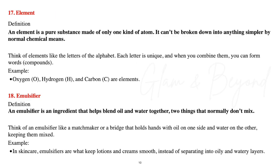Number seventeen, element. An element is a pure substance made up of only one kind of atom — it can't be broken down into anything simpler by normal chemical means. Think of an element like the letters of the alphabet: each letter is unique, and when you combine them, you can form words, or compounds. Examples: oxygen (O), hydrogen (H), and carbon (C) are examples of elements.